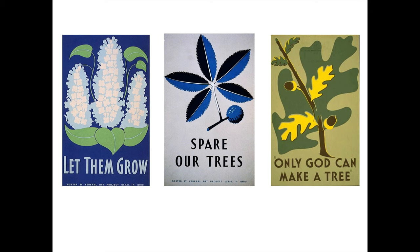We're looking at posters made by Stanley Thomas Clough between the 1920s and 1940s, made through the WPA — the Workers Progress Administration — which gave money to artists to make posters and ads for public parks. On the left it says Let Them Grow, in the middle Spare Our Trees, and on the right Only God Can Make a Tree. Very powerful images, very simple. The hierarchy is very evident: image at the top, text second, then the federal art project WPA credit. A minimal use of color, as government-sponsored projects needed to save on printing.